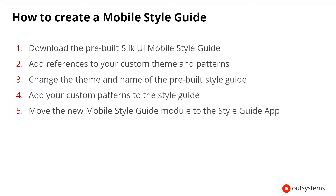Here's a summary of the steps that we'll take to create a new mobile style guide. First, we'll download the pre-built SilkUI mobile style guide. Then, add references to your custom theme and patterns. Then we'll change the theme and the name of the pre-built style guide. Then, add custom patterns to the style guide, and finally move the new mobile style guide module to the style guide app.